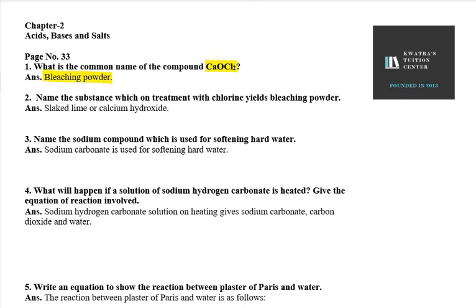Next question: name the substance which on treatment with chlorine yields bleaching powder. The compound which, when treated with chlorine, gives bleaching powder is calcium hydroxide — you can also write its other name, which is slaked lime. That is the common name.